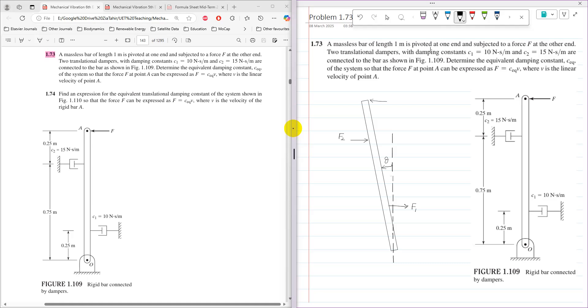If the displacement of this point is X from its mean position, its velocity will be V. For this point, it will have displacement X2 and velocity V2. This point will have displacement X1 and velocity V1.